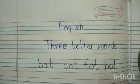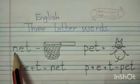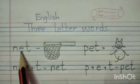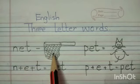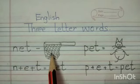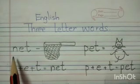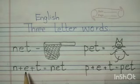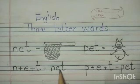Today we will learn some more words. The first word is Net. N-E-T, Net. This is used to catch fish. Now this word has 3 letters — first letter, second letter, and third letter. N plus E plus T, N-E-T, Net.